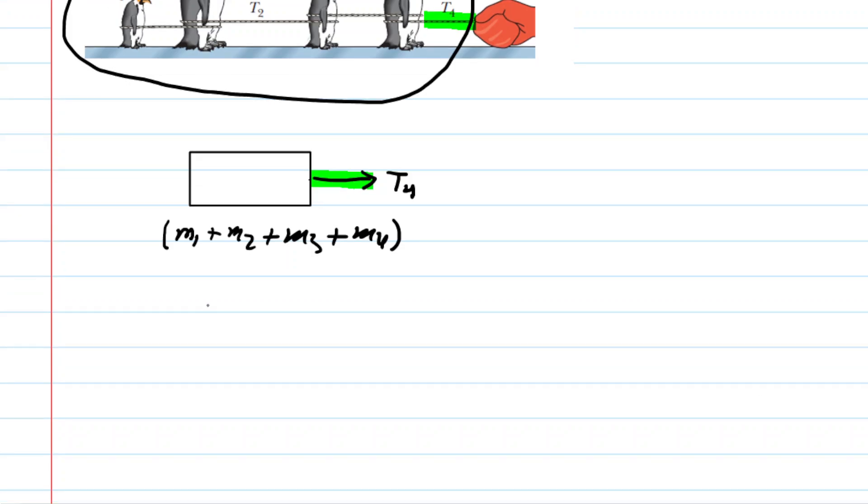...we could apply Newton's second law. We know that Newton's second law would tell us that the sum of the forces acting in the x-direction would equal the mass of our system multiplied by its acceleration. So again, the only force acting in this horizontal x-direction is T4. And then for the mass, we'll plug in the sum of the four masses, and then this is multiplied by the acceleration.